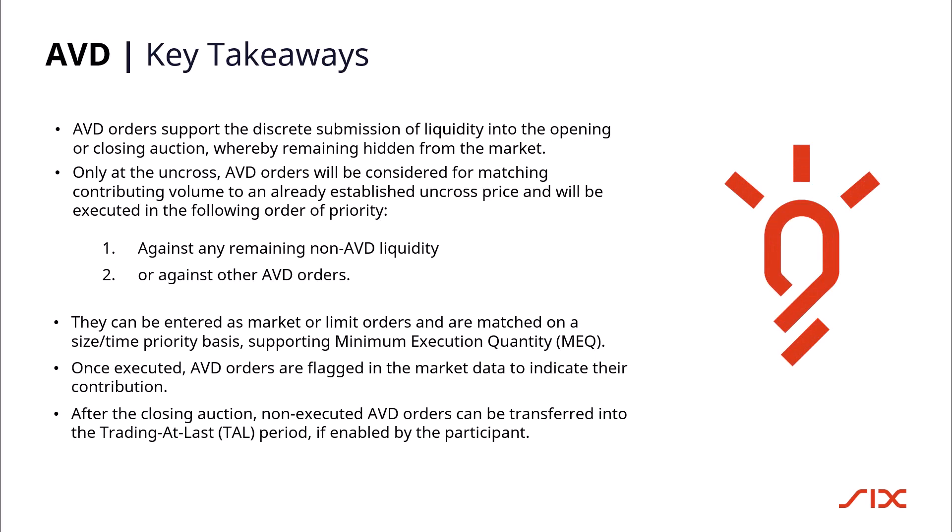AVD orders support the discrete submission of liquidity into the opening or closing auction, remaining hidden from the market. Only at the uncross will AVD orders be considered for matching, contributing volume to an already established uncross price. They are executed first against any remaining non-AVD liquidity, and then against other AVD orders. They can be entered as market or limit orders and are matched on a size-time priority basis, supporting minimum execution quantity.